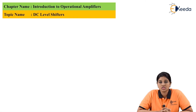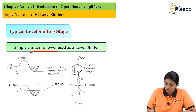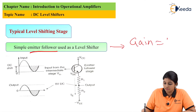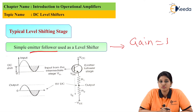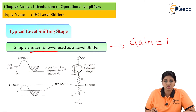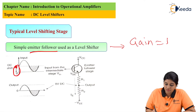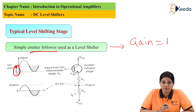Many circuits can be used as a DC level shifter. A simple DC level shifter is formed by using an emitter follower circuit. The emitter follower circuit provides gain equal to 1, so it will not alter or amplify the signal. The input to this DC level shifter circuit is the amplified version of the signal, and we can see from the diagram that the signal has a DC shift — meaning the signal is not starting from zero. The DC level shifter circuit brings the signal back to the zero level with respect to ground.